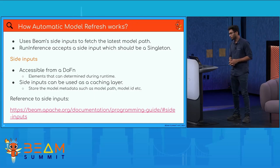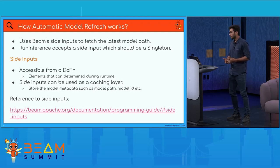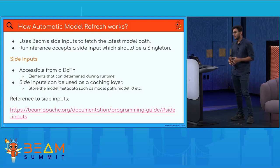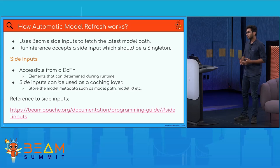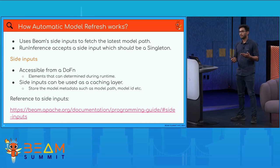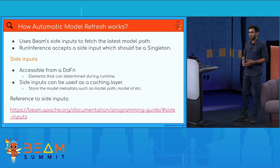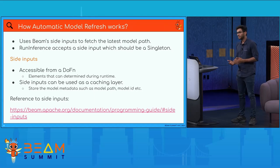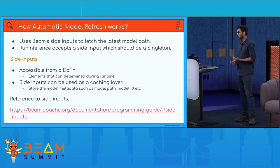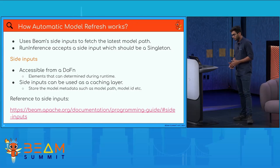How does automatic model refresh work? It uses Beam side inputs to fetch the latest model path. For example, you provide a default model path to the model handler, the streaming pipeline runs with that model. If you have a model B with better metrics than model A and want to swap them, that's the use case — achieved by automatic model refresh using side inputs.